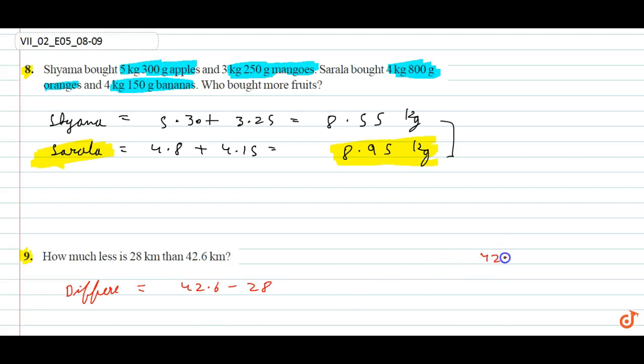The method is 42.6 minus 28. Because the decimal point is nothing, we write it as 28.0. Working through the calculation: 0 minus 0 is 0, then 6. For the ones place: 12 minus 8 is 4. For the tens place: 3 minus 2 is 1. The answer is 14.6.